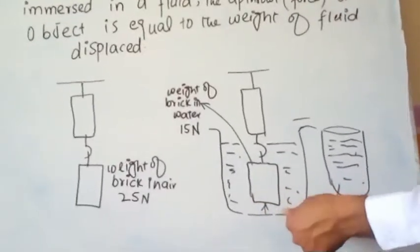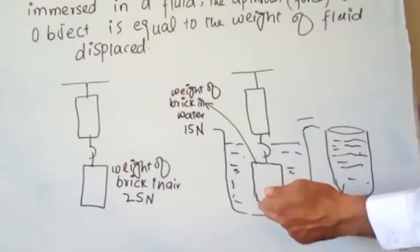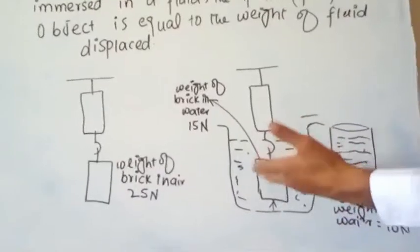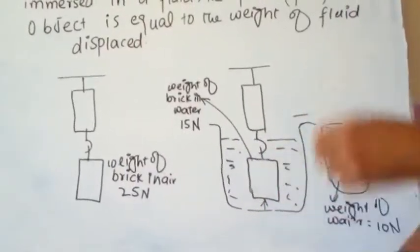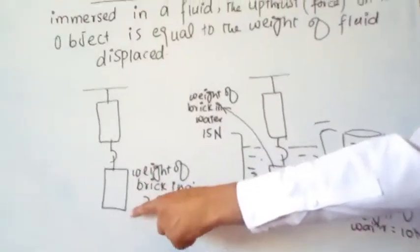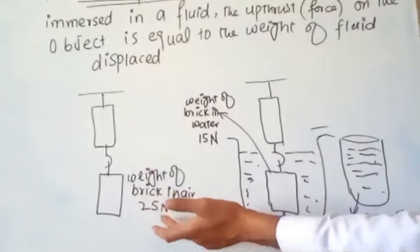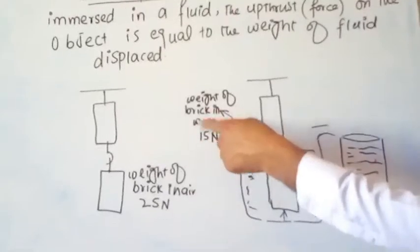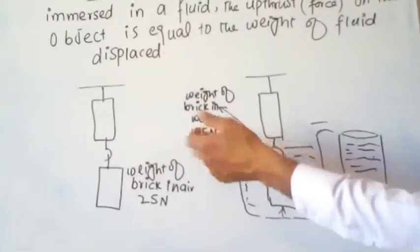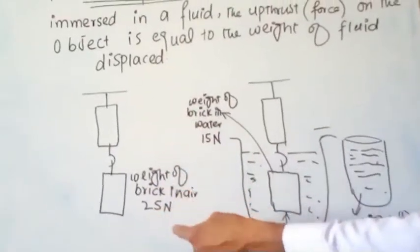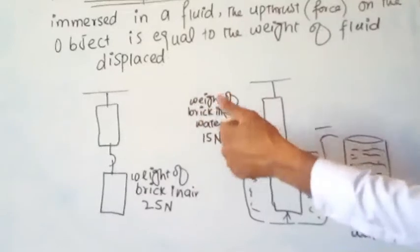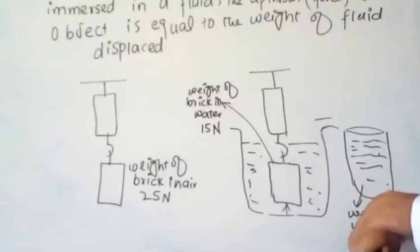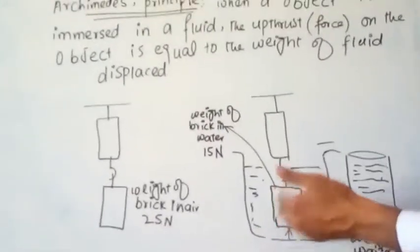The upthrust is 10 Newton according to Archimedes' Principle. Archimedes explained that the weight of the displaced water — 10 Newton — is equal to the upthrust on the brick. The brick weighed 25 Newton in air, loses 10 Newton of weight when submerged, and therefore weighs 15 Newton in the water. So the brick loses 10 Newton of weight, and that 10 Newton equals the weight of the water displaced, which is equal to the upthrust on the brick.